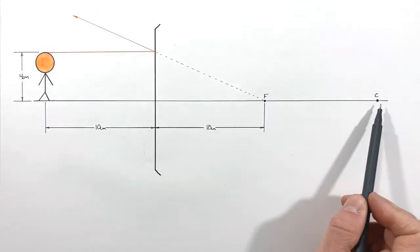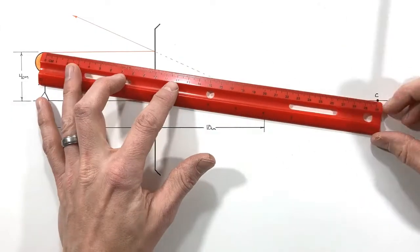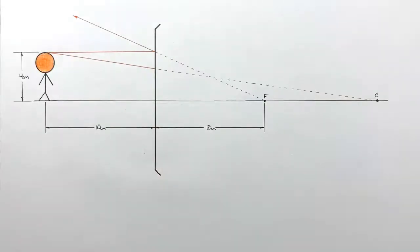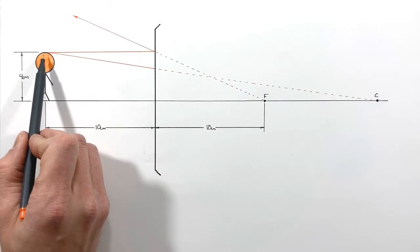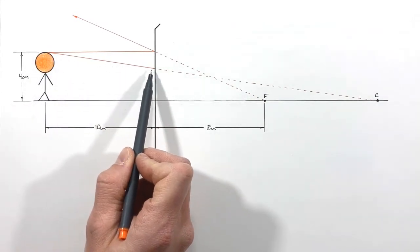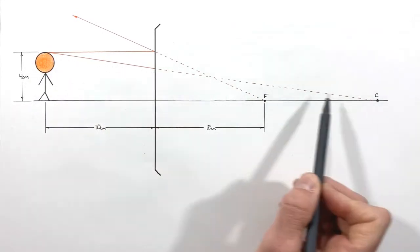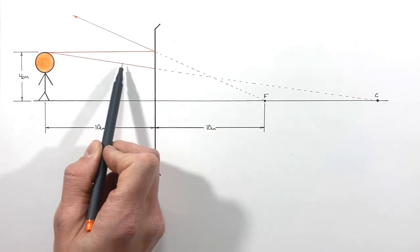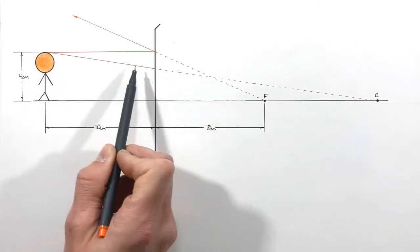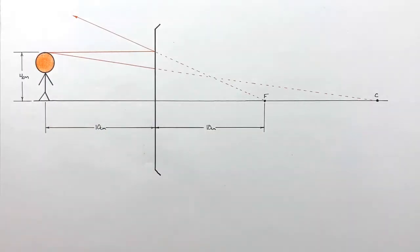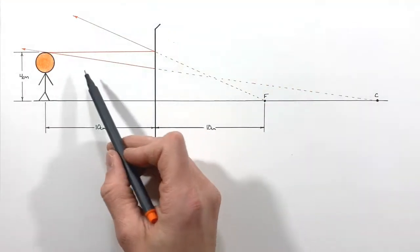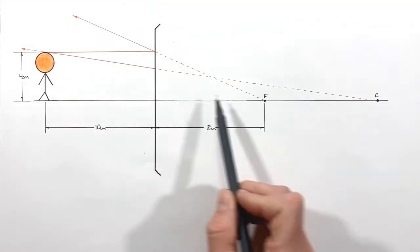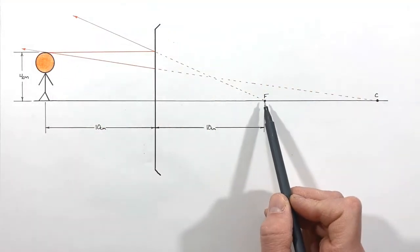Our next ray travels from the top of the object toward the center of curvature. When a light ray strikes a mirror traveling toward the center of curvature, it turns around and bounces right back along the same path. Our last ray is the focal ray — the ray that starts at the top of the object and heads toward the focal point.